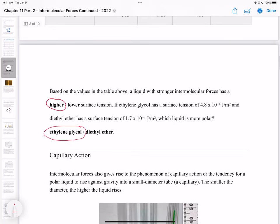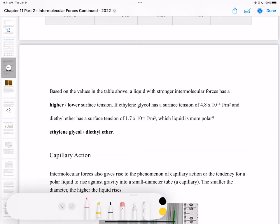Based on the values in this table, stronger intermolecular forces mean higher surface tension. If ethylene glycol has a surface tension of 4.8 x 10^-2 J/m² and diethyl ether has 1.7 x 10^-2 J/m², which liquid is more polar? Ethylene glycol, because the higher the surface tension, the more polar your molecule is.